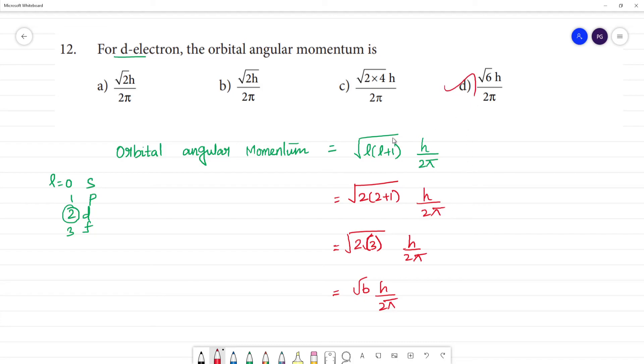So the answer is square root of 6 into h by 2 pi, which is the orbital angular momentum of d electron.